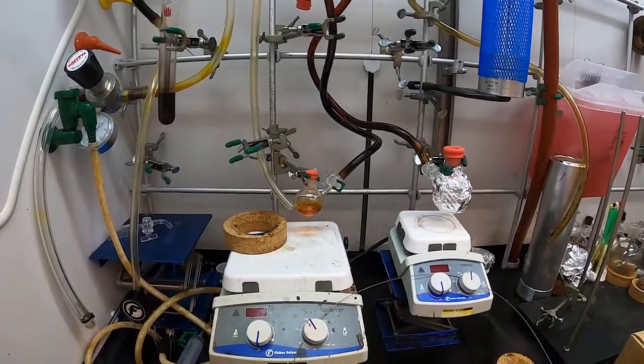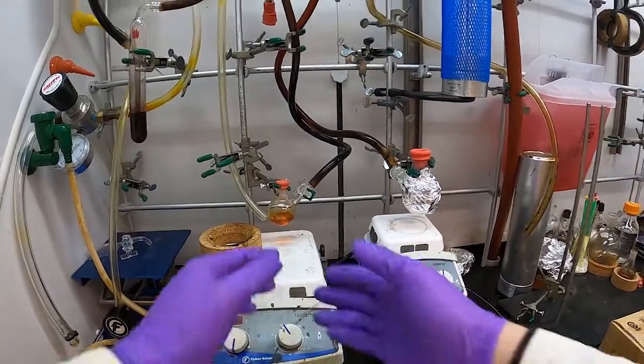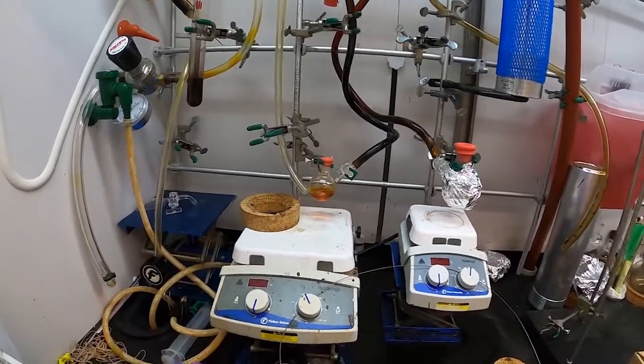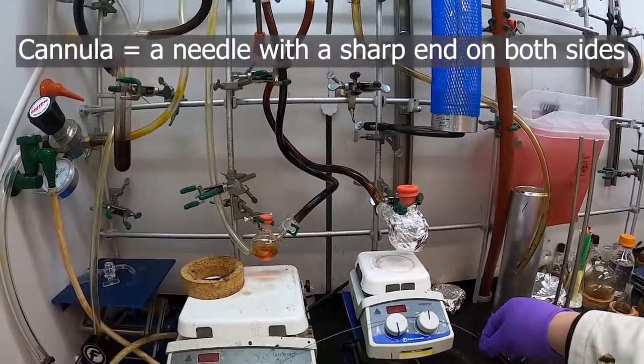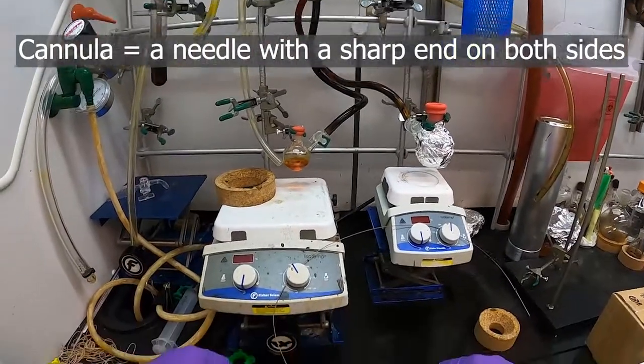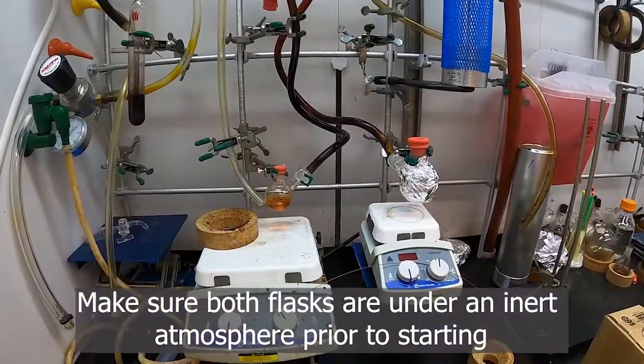Similar to the way we syringed out solvent, another way to move solvent or to transfer solutions from one flask to another is with a cannula. It's just a double-ended needle, but there's a specific way to do this that makes it work best and maintains your inert atmosphere.